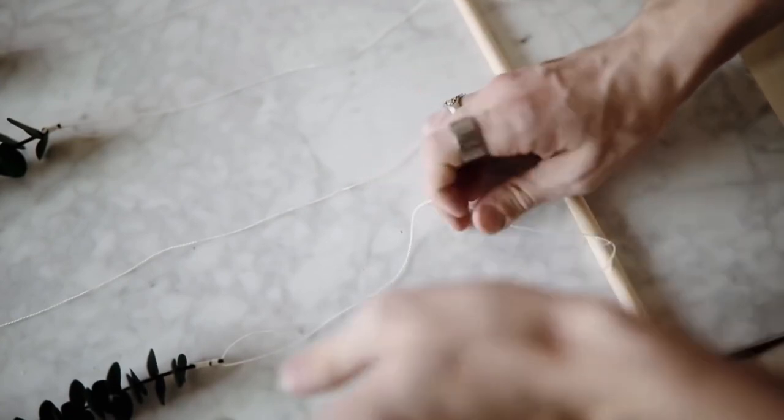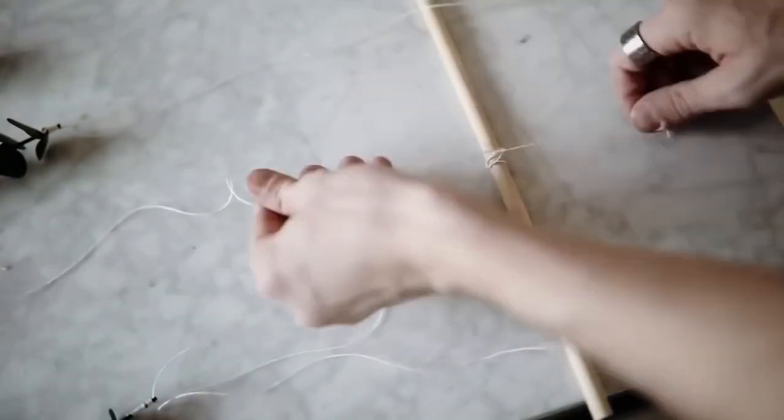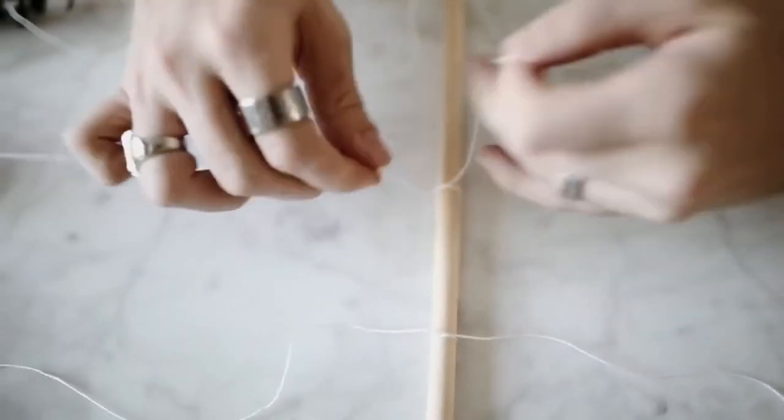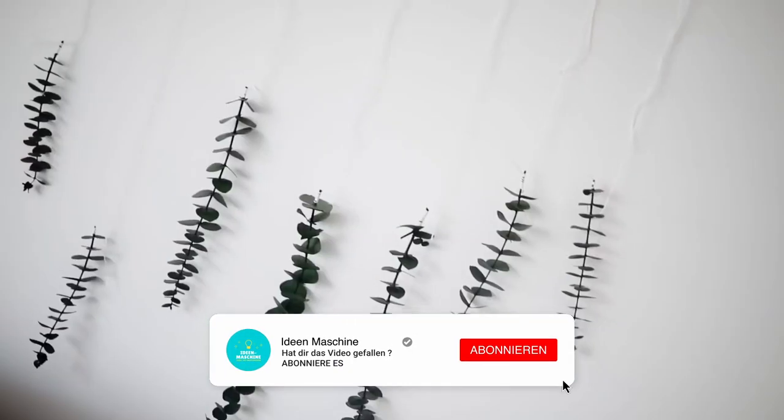I just double knotted these onto my wooden dowel all the way down, making sure they were nicely secured. Once you have them all attached, you can hang it on your wall and that finishes off your eucalyptus wall hanging.